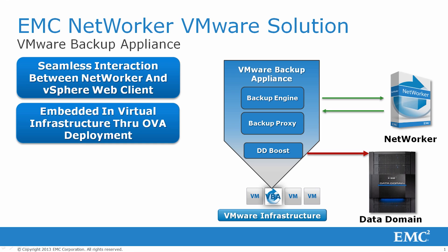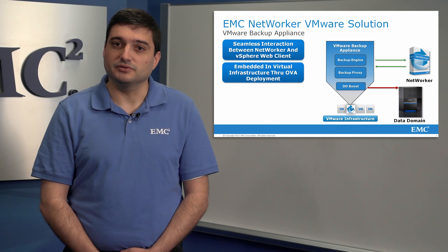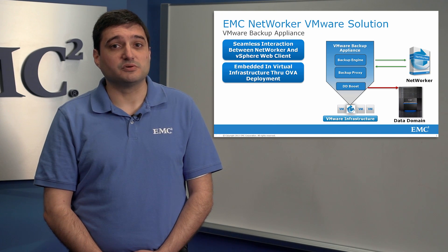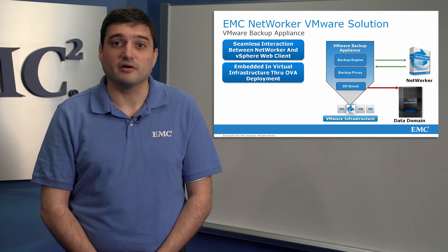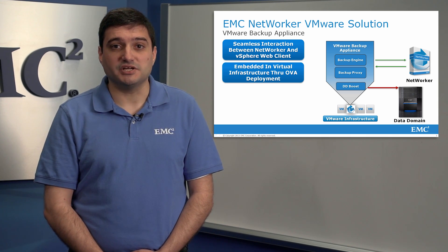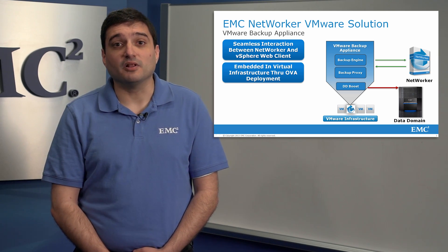The NetWorker solution is embedded into the virtual infrastructure via an easy-to-implement OVA virtual appliance. The OVA installation steps include assigning the vCenter resources such as storage, hypervisors, network, etc., assigning the proper IP configuration, and finally, powering on the virtual appliance.